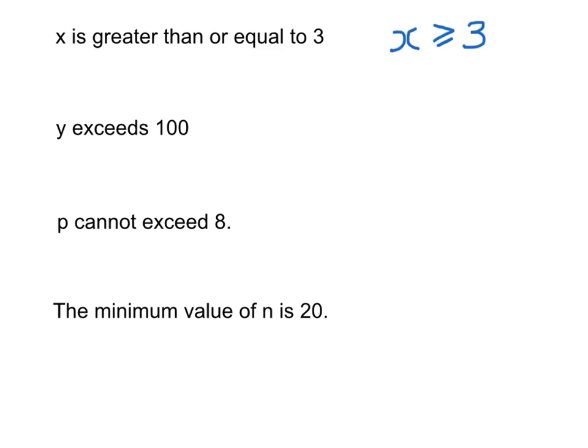y exceeds 100. Exceeds means 超过, therefore y should be at least or exceeds 100, so y > 100. In this case, the equal sign should not be included because exceed does not include equal. In fact, the term 'exceeds' can also be replaced by the word 'at least' - y is at least 100.